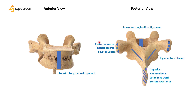If you observe closely, the names are indicating a lot regarding the attachments. For example, 'costotransverse' indicates that one end of the muscle is attached to the transverse processes, while 'costo' indicates the other end is attached to the ribs. Similarly, 'intertransverse' indicates the muscle is attached to two transverse processes subsequently.